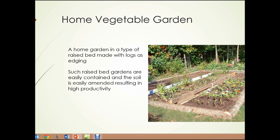Here we see a home vegetable garden. This is made in a type of raised bed using logs as edging. Raised bed gardens such as this are easily contained — it's easy to keep the lawn out of the garden and the garden out of the lawn. The soil is easily amended, resulting in really high productivity.